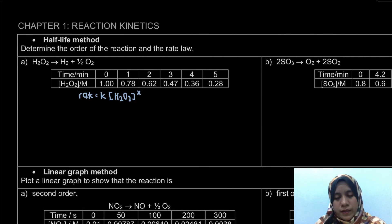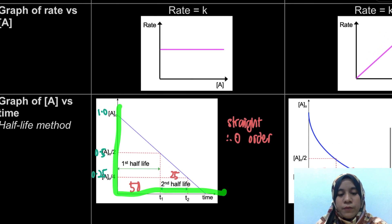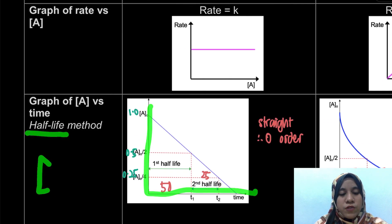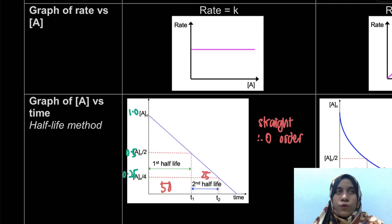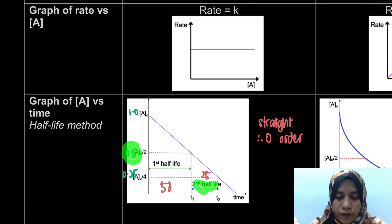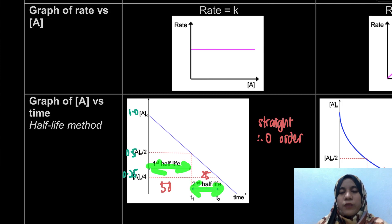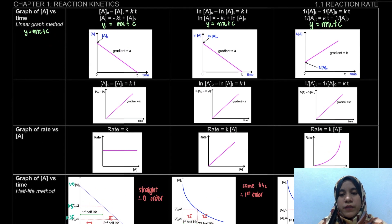For the half-life method, we have to plot a graph of concentration against time. Remember, half-life means when the concentration drops to half. For example, if the initial concentration is 1, the first half-life is when it drops to 0.5. The second half-life is when the concentration drops to another half — from 0.5 down to 0.25. From the first and second half-life, we compare them to determine the order of the reaction.